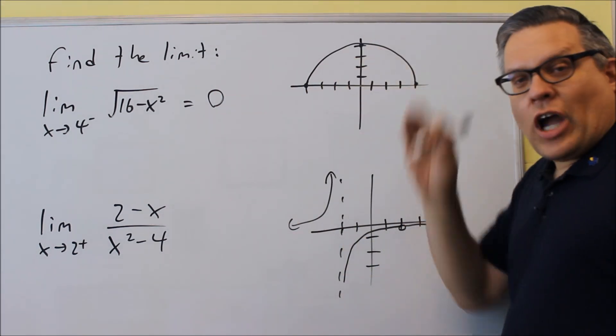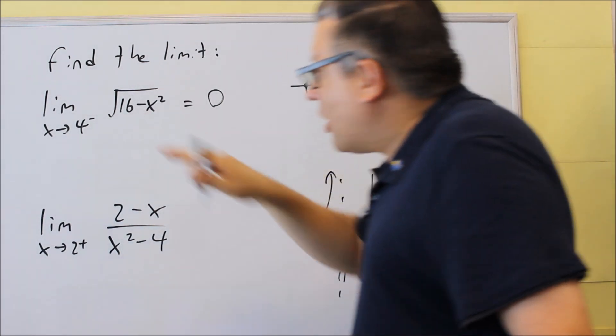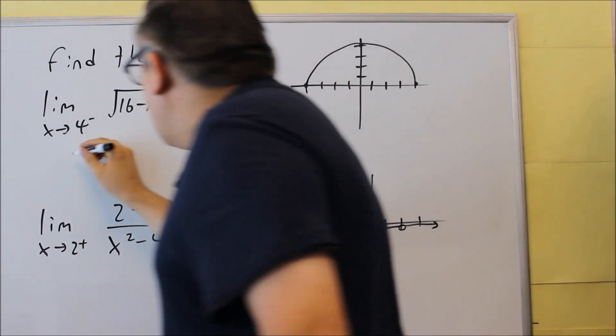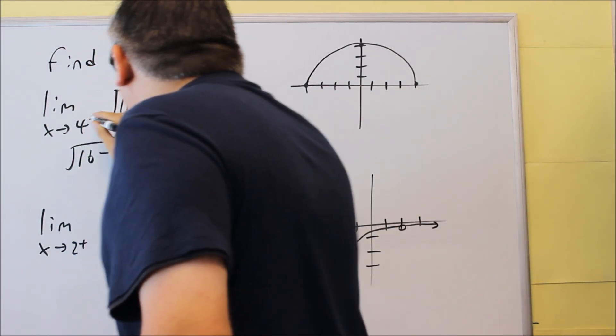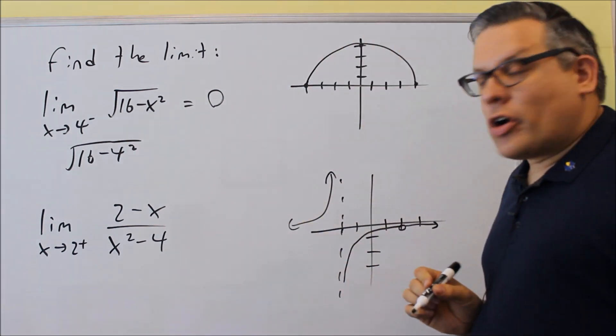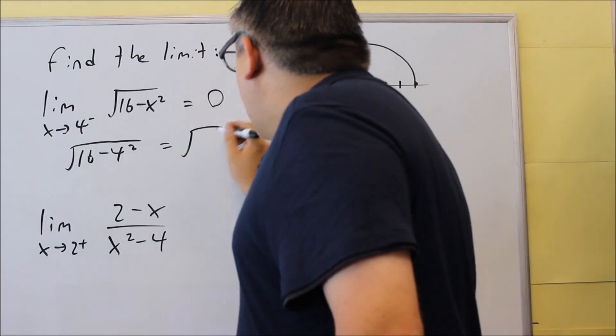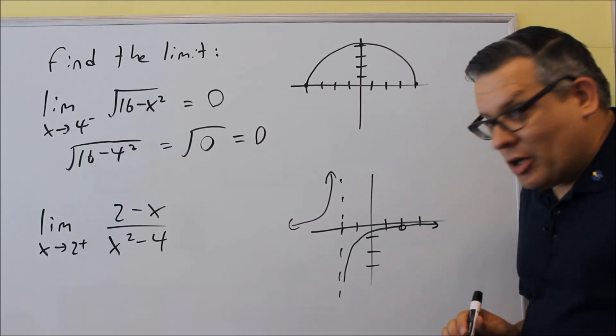So it means that looking at the graph, I can say that that approaches 0. Now if I didn't have a graph provided, how could I do this? Well, I would actually just go ahead and plug 4 directly into that, like we did before for previous limits. So even though I have 4 going from the negative side, I can still just put the value of 4 in there, and by doing that I would get a 0 here, and I would end up getting a 0 as the limit.